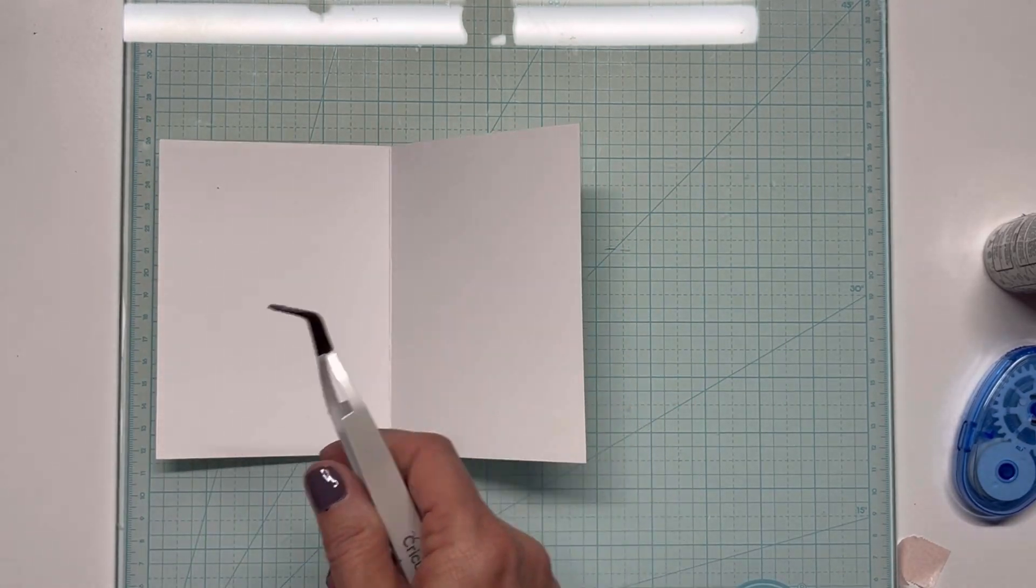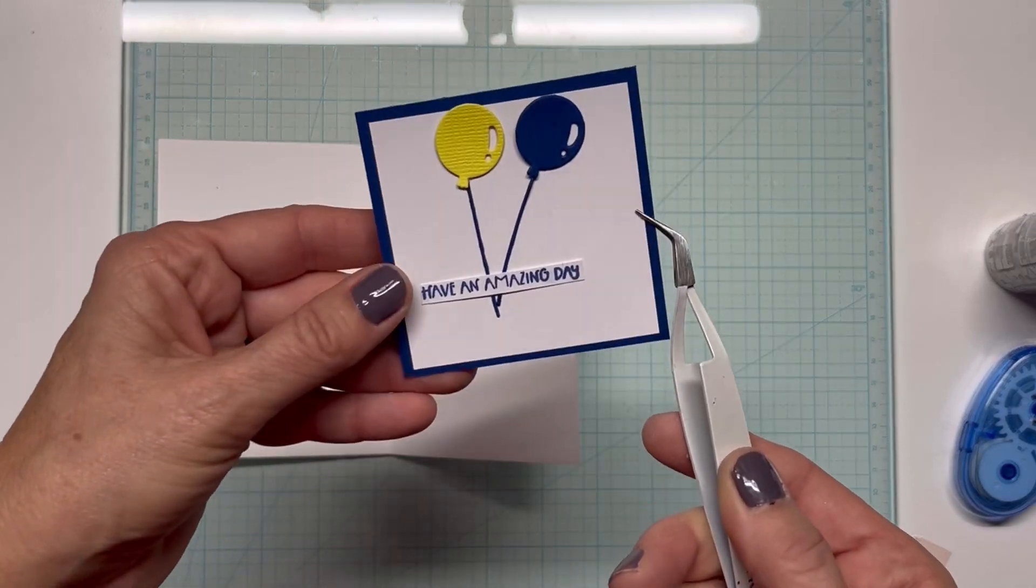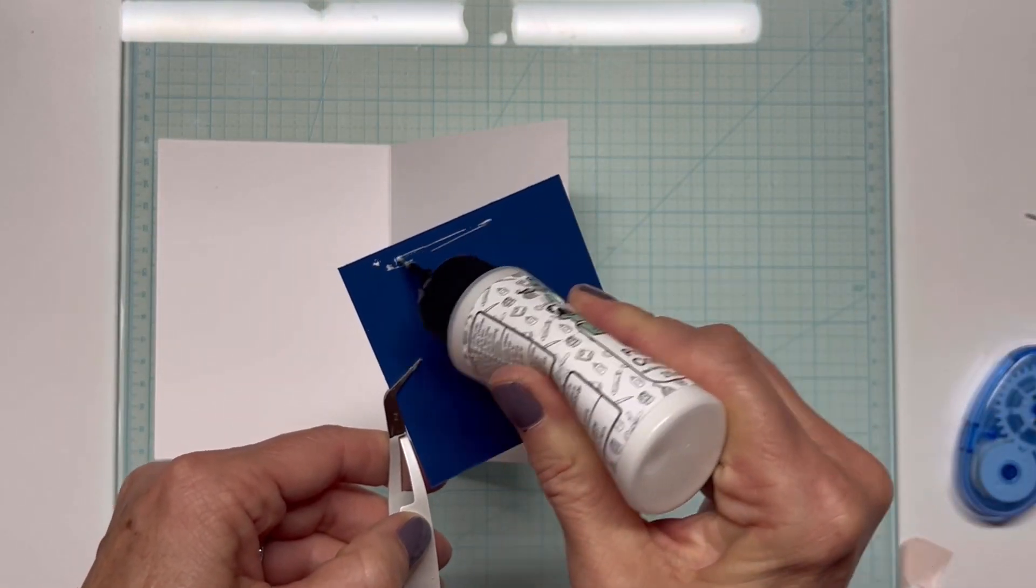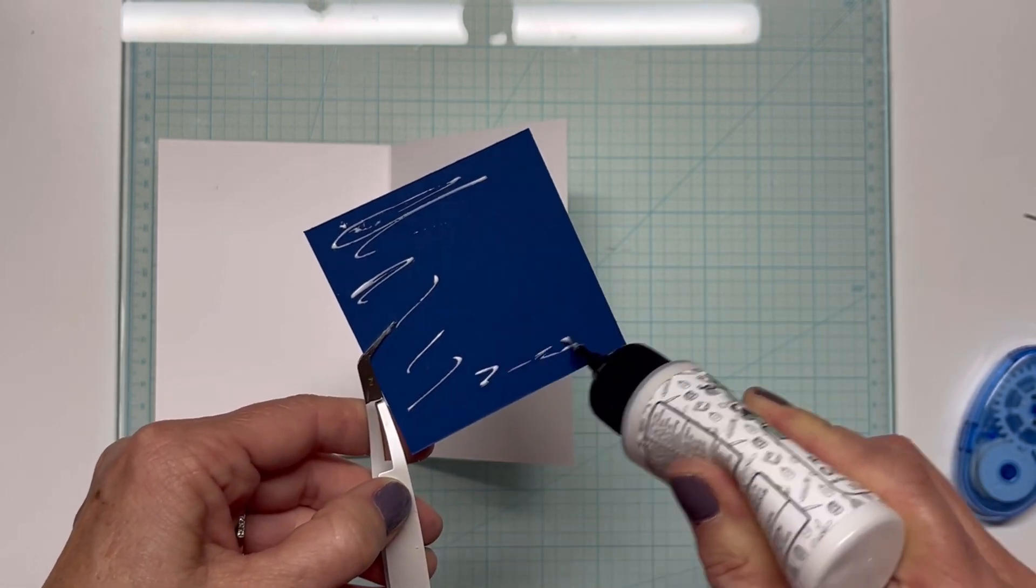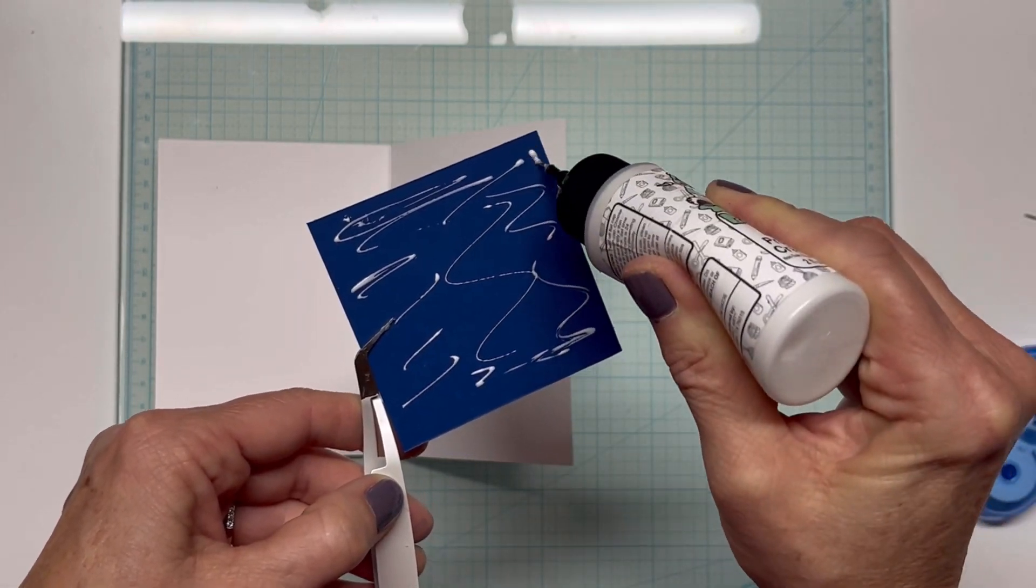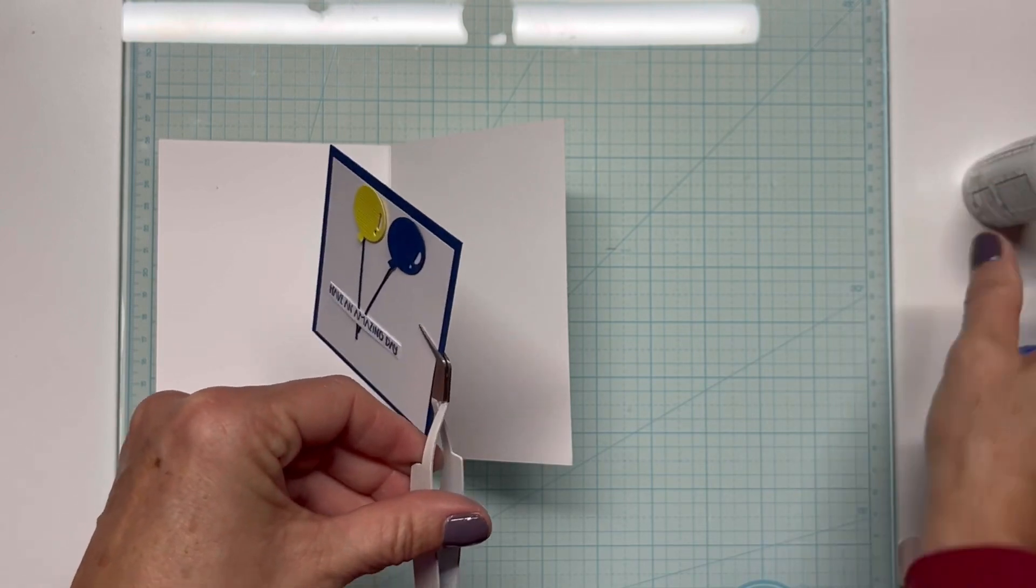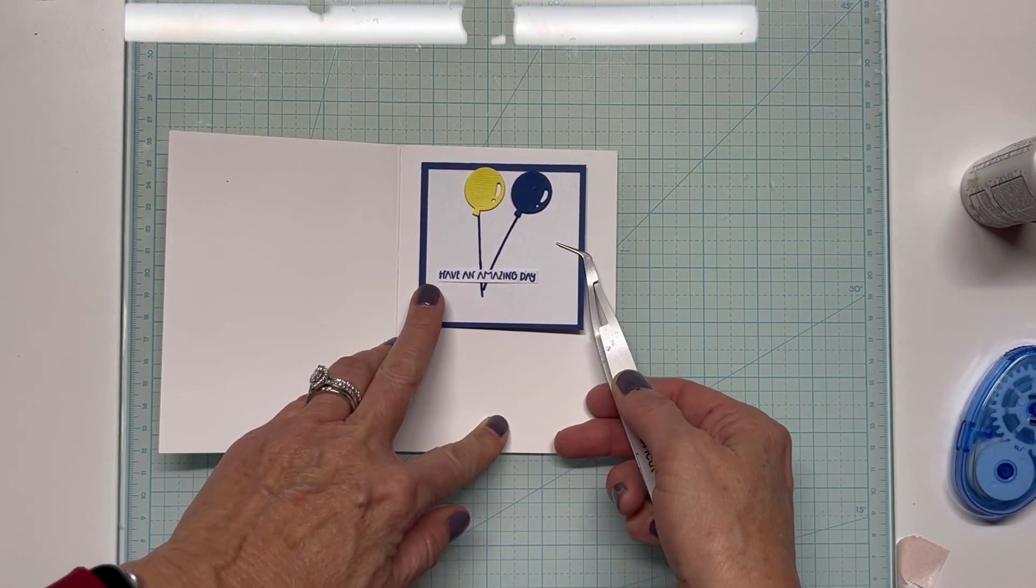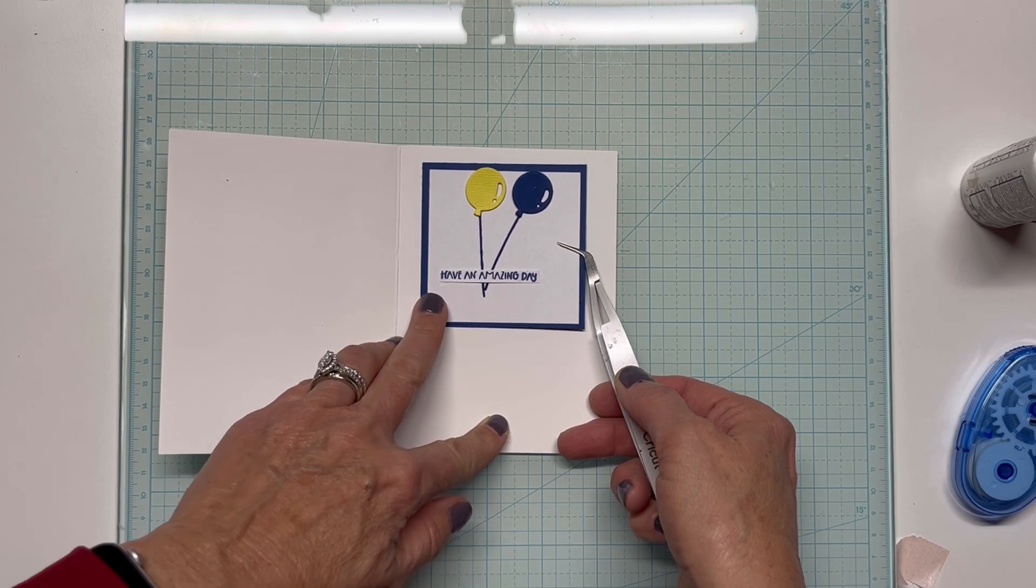So I had some additional scraps that I thought I could use and so I went ahead and layered some more of that blue with some white. Then I had a couple more balloons that I die cut out and I'm going to just decorate the inside of my card. A lot of times I don't do that on camera but I thought that it would be cute and it says, 'have an amazing day.'